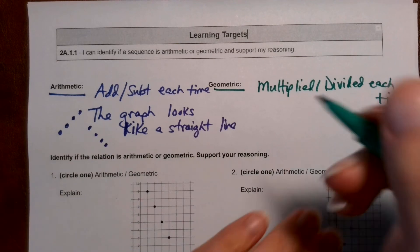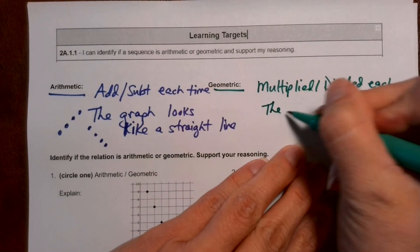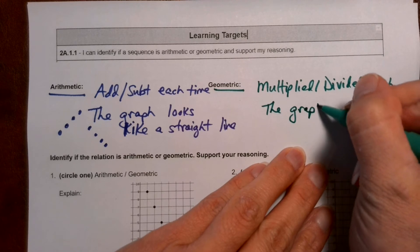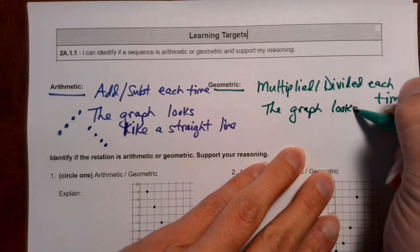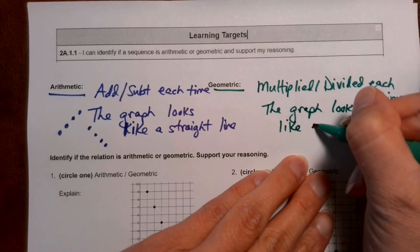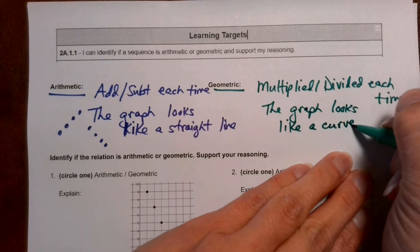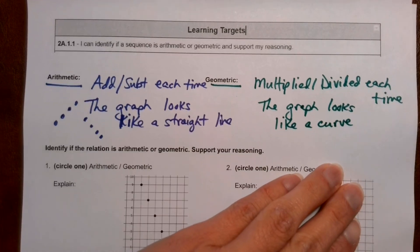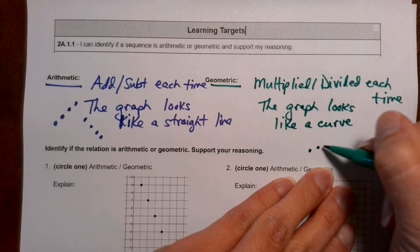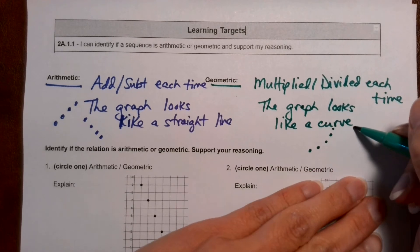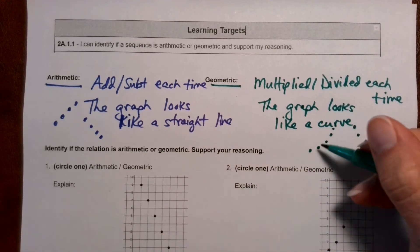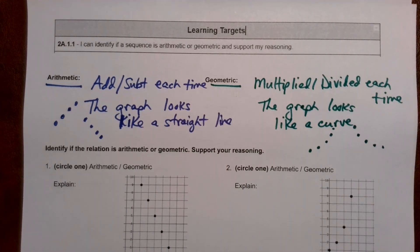If you're geometric, what does the graph look like? The graph looks like a curve. The graph is going to look like a curve. So what would the points look like? Curvy, curvy, growing higher, higher. Or they could be growing and decaying down. Curvy up or curvy down.